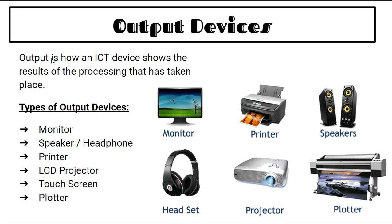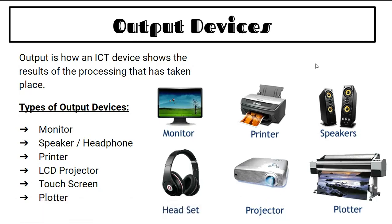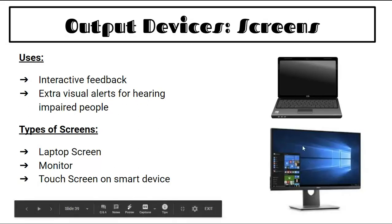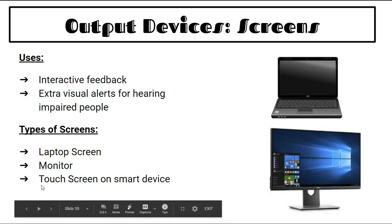Output is how an ICT device shows the results of processing. Examples include screens. Screens provide interactive feedback and extra visual alerts for hearing impaired people. Types of screen: laptop screen, monitor screen, touch screen on smart devices, and TV screen.